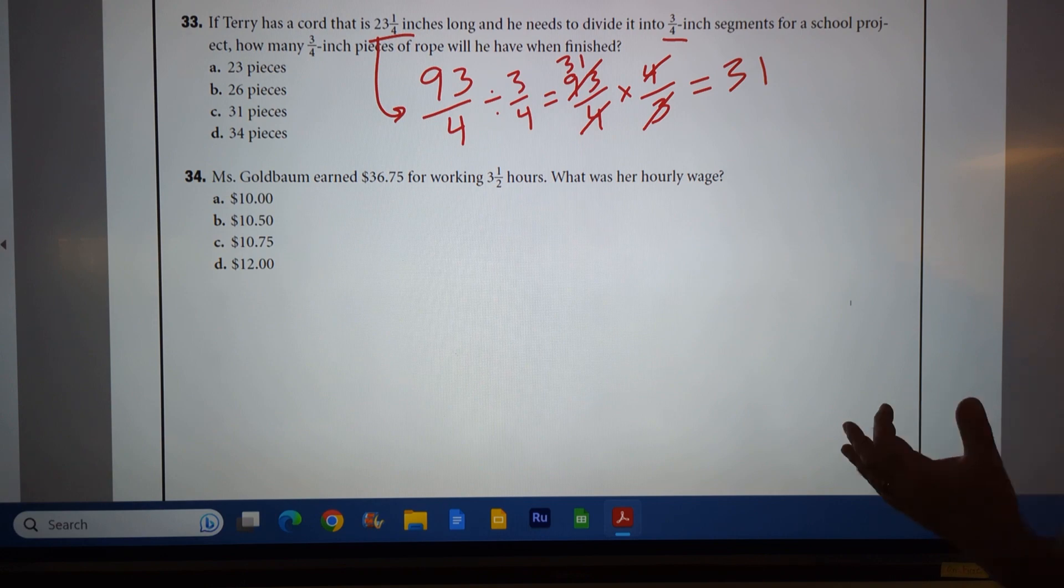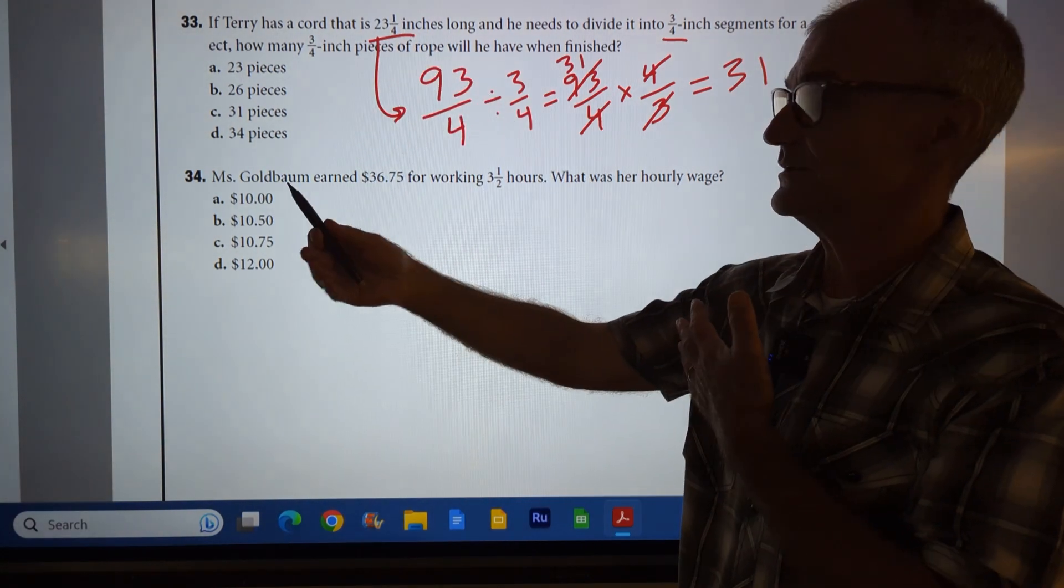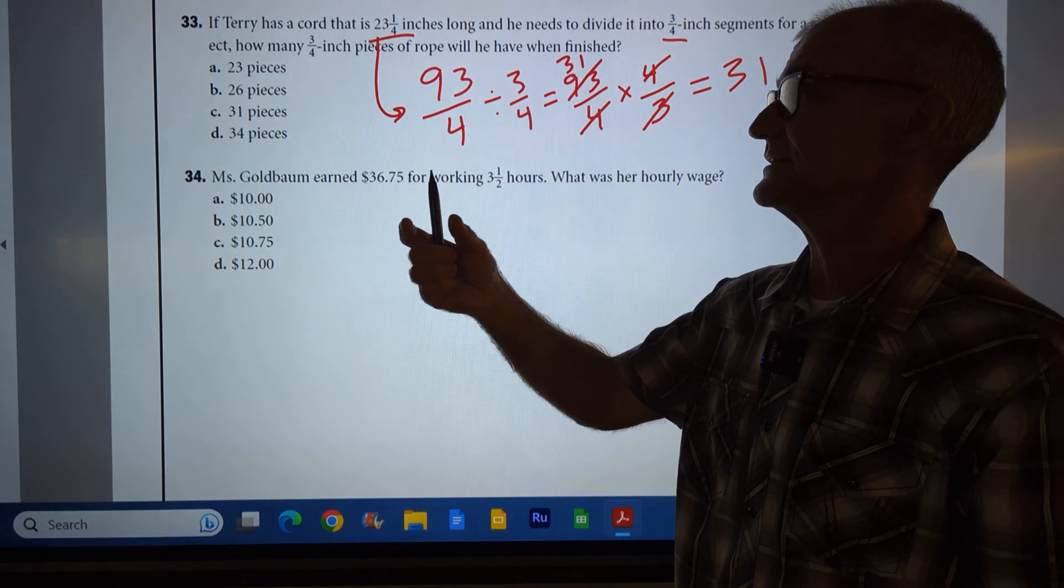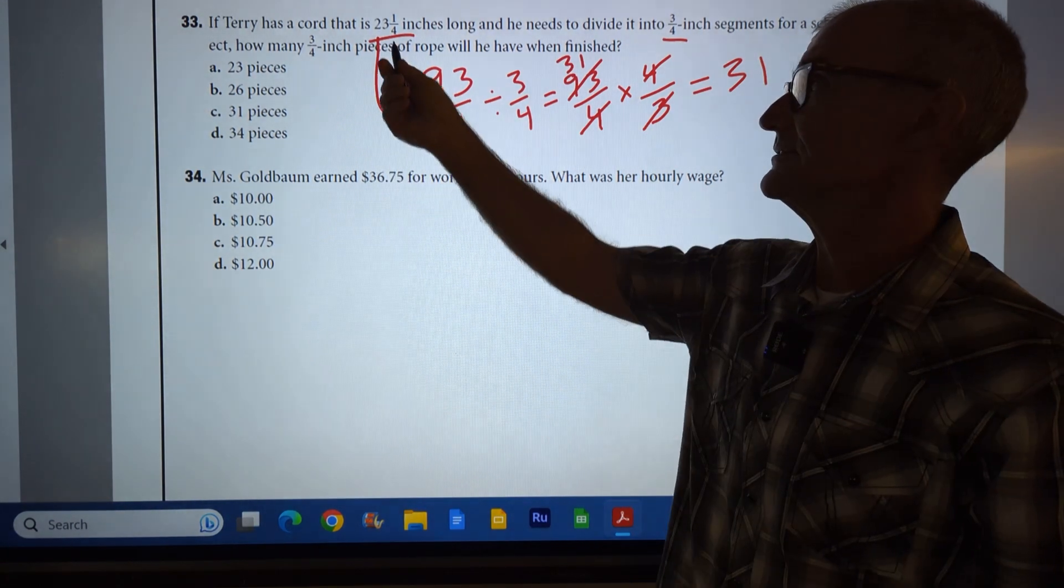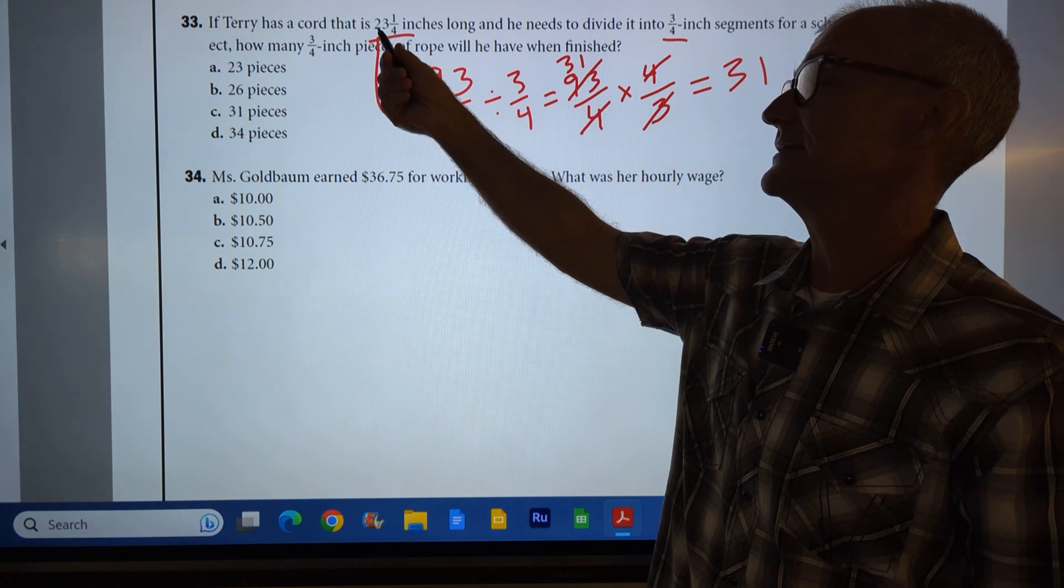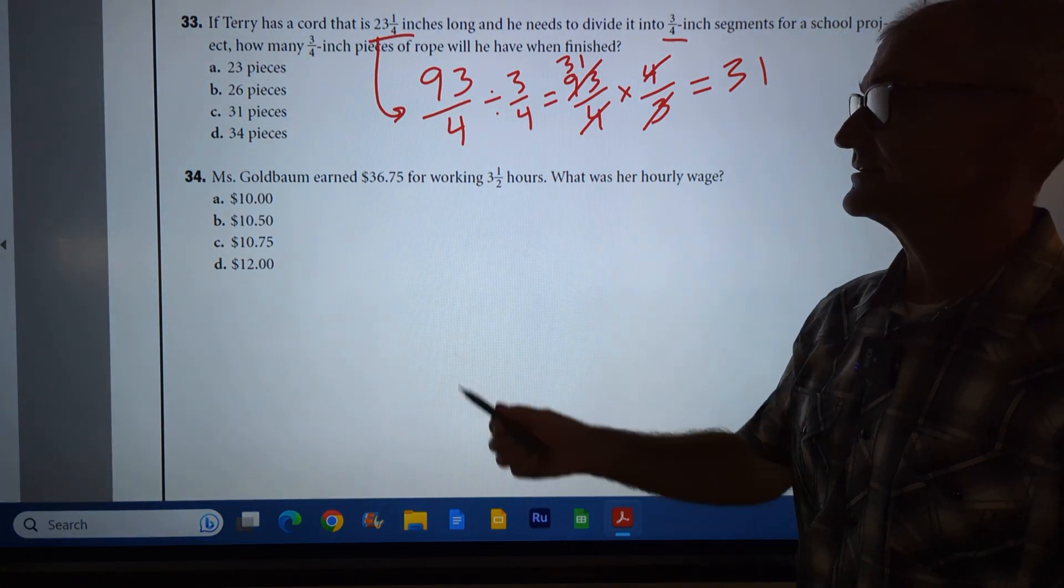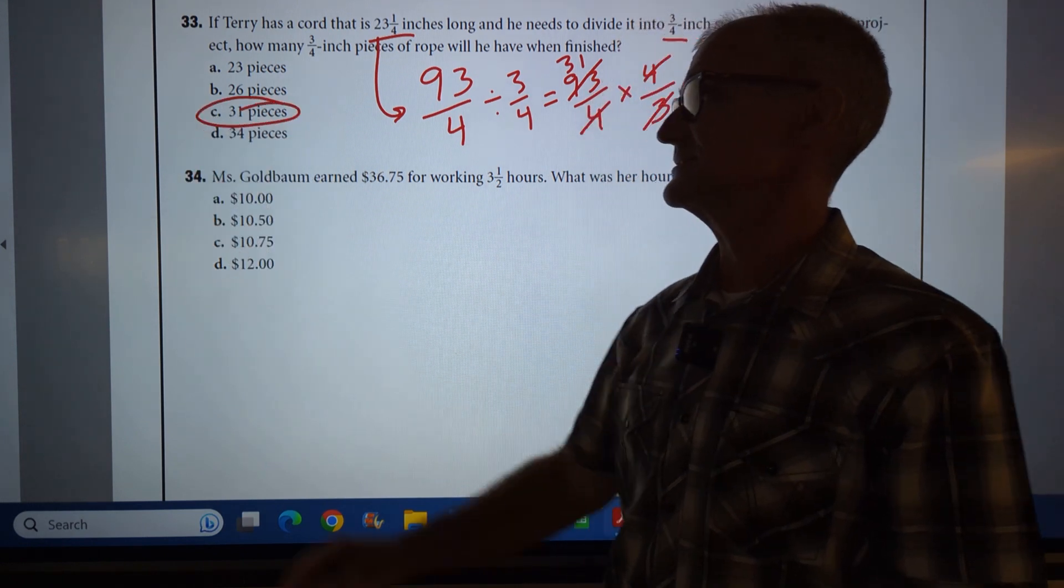Does that even make sense? Let's think about that. The thing's 23 inches long. I'm cutting it into pieces less than an inch, three-quarters of an inch. So I'd expect, you know, a fair bit more than that, like a quarter more or so. So 31 does make sense. Correct answer, answer C right there.